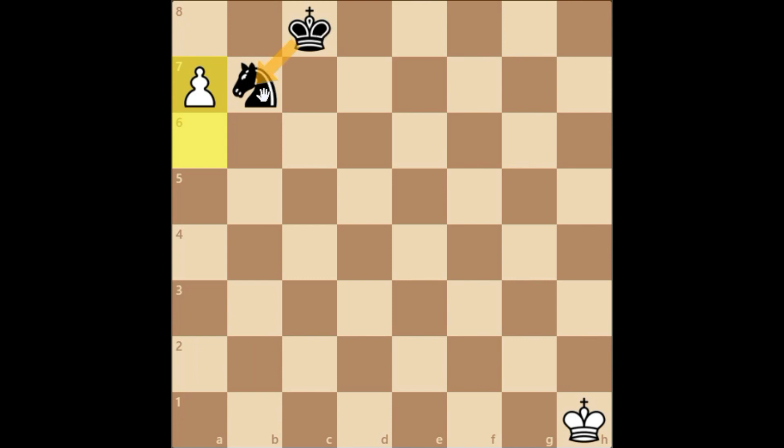So just push the pawn. As you can see, the knight is preventing the king coming to b7. After the next move, White queens and wins the game. I hope you enjoyed this video. For more videos like this, please like and subscribe, and it's bye for now.